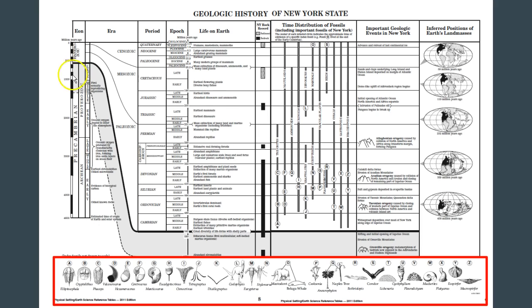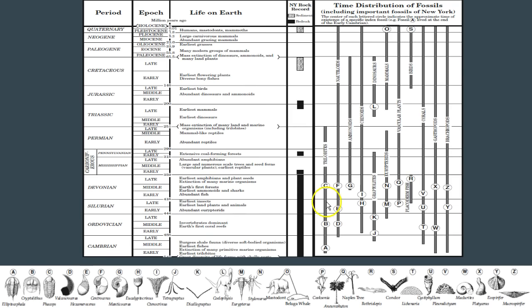Going back to your timetable, you don't have a great diversity of life occurring in the Precambrian eon. Most of the Precambrian eon does not have a great diversity of life. It's not until the Phanerozoic eon, or the beginning of the Paleozoic era, that we start to get great diversity of life. To illustrate that, you can look at the bottom here — you have some index fossils labeled A through Z, and those correspond with the time distribution of fossils shown as a bar graph.